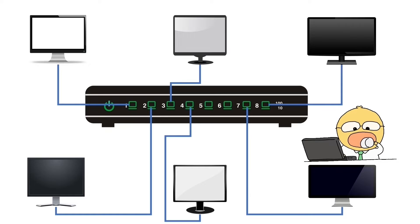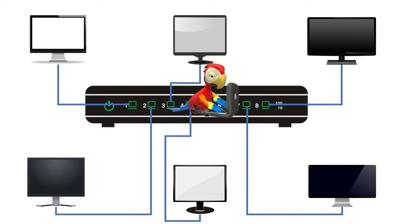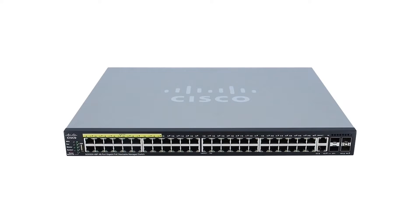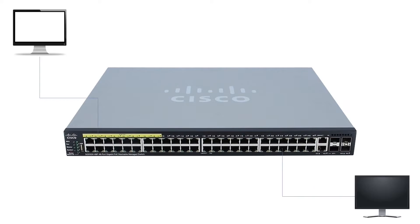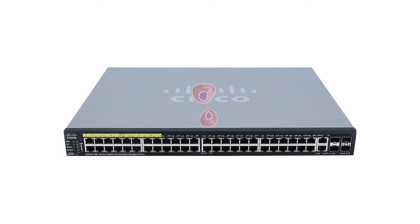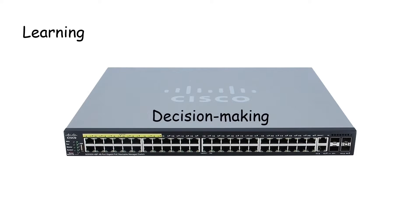Before we learn how VLANs work, we need to understand how switches learn the MAC addresses of connected devices and make forwarding decisions. A switch has many ports and forwards an incoming frame only from the port connected to the destination device. We can divide this process into three phases: learning, decision making, and forwarding.